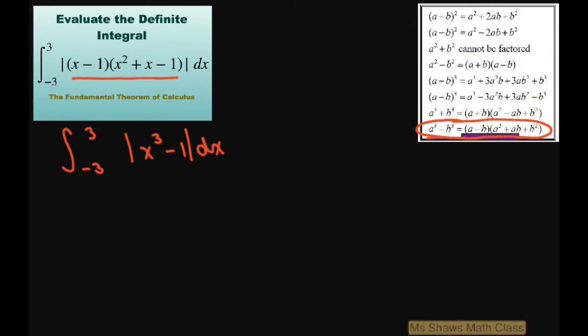So I just made it look like that, which makes it a little easier. Now it is absolute value, so we're going from negative three to three, and if I set x cubed minus one equal to zero — remember this is your derivative since this is your anti-derivative — we get x cubed equals one, or x equals one.